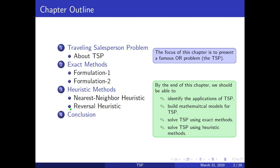In the reversal heuristic, the idea is: given a tour, select some of the arcs and reverse them, and you get another solution. You follow this procedure systematically to obtain a greedy solution.